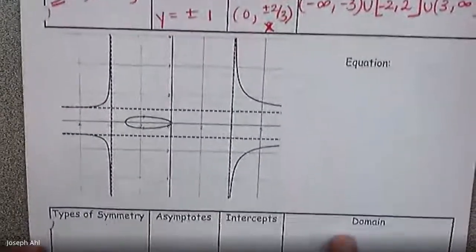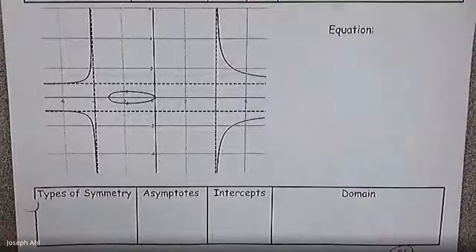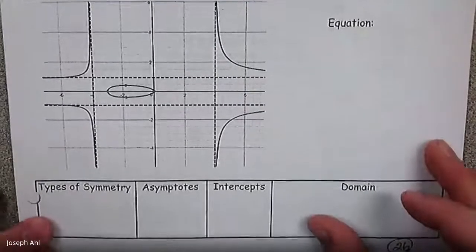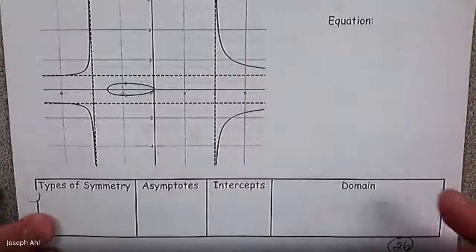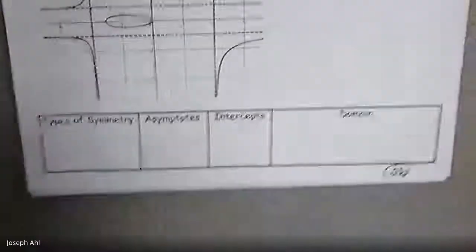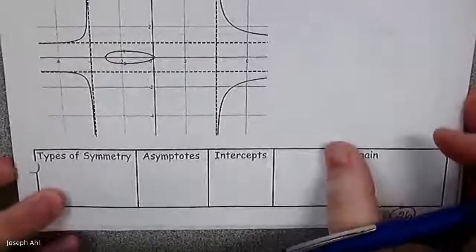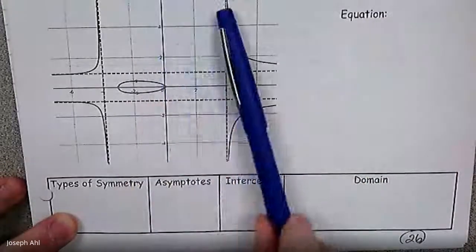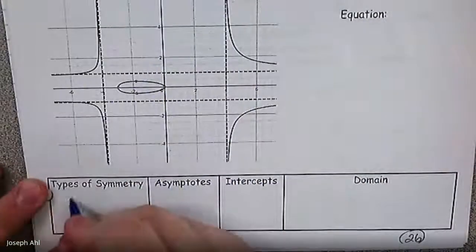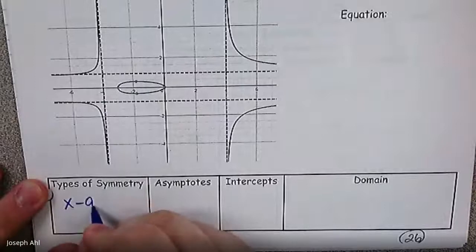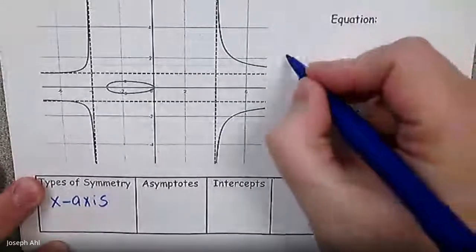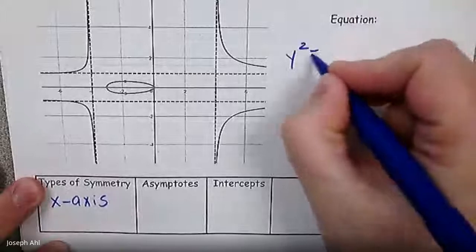Let's do a similar one right below it. If you want to challenge yourself, hit pause and check back in with me in a moment. Let's talk about types of symmetry first for this one. Does it have x, y, and origin symmetry just like the last one? Not quite. It's not symmetric about the y-axis, and it's not symmetric about the origin, but it is symmetric about the x-axis.